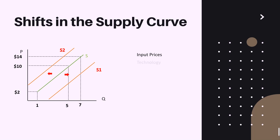The next supply shifter is technology. By technology, we primarily mean situations where new technologies make production cycles more productive. When organizations apply new technologies, they can reduce their costs, increase their profitability margin, and thus be more incentivized to produce more.